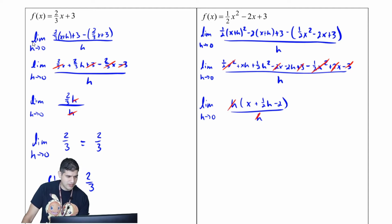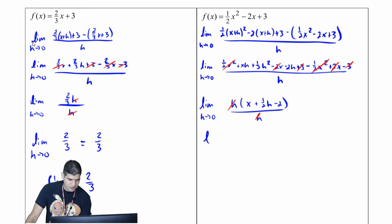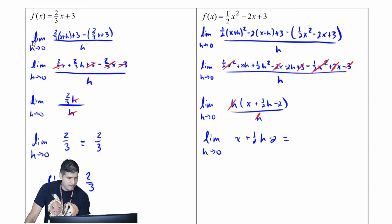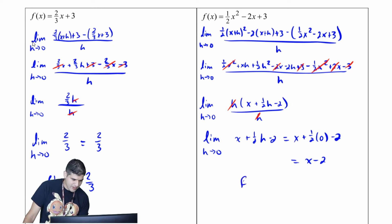Those h's divide out, and now I can make my substitution. The limit as h approaches zero of x plus one-half h minus two gives me x plus one-half times zero minus two, which is x minus two. So f prime of x equals x minus two.